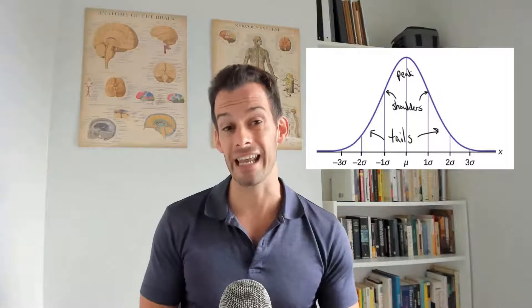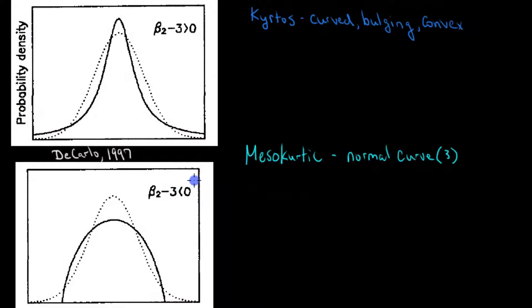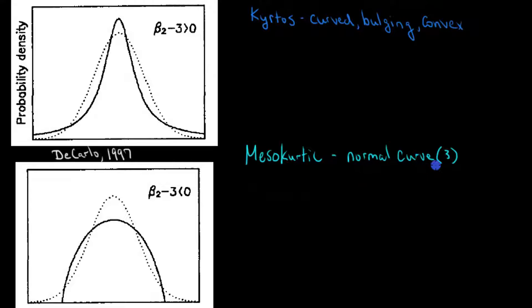Now that we have a sense of these different parts of a distribution, we can look at some of the somewhat misleading terminology used to talk about kurtosis. These terms were coined by Carl Pearson in 1905. We start with 'kurtos,' which is where we get kurtosis — the Greek for curved, bulging, or convex. We have three different prefixes: lepto, meso, and platy. A mesokurtic distribution — meso meaning middle — is our comparison point, because a normal curve is an example of a mesokurtic distribution, and its raw kurtosis score is a value of three.